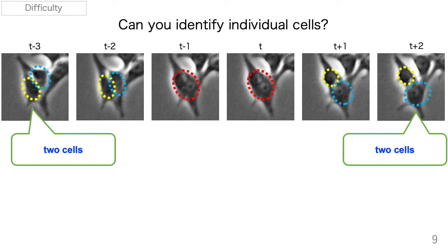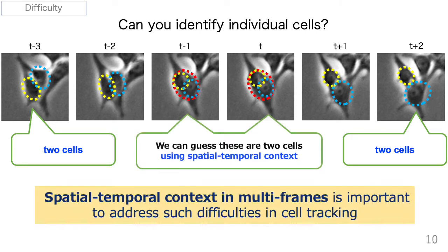If we can detect two cells, we can estimate the next frame cell position by tracking. Finally, we can guess there are two cells at frame t-1 and t using spatio-temporal context. Therefore, spatio-temporal context in multi-frames is important to address such difficulties in cell tracking.